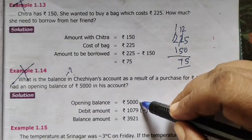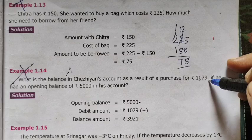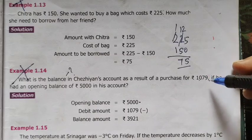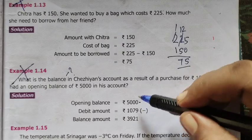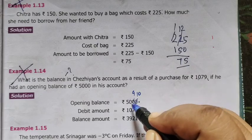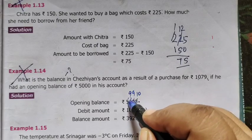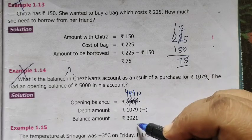Opening balance minus what amount he has spent. He has spent 1079 to buy something. So separate it. This first 0 becomes 10 and 9. This also 9. This is 4. So you are getting 10 minus 9 is 1.